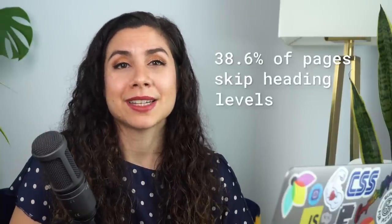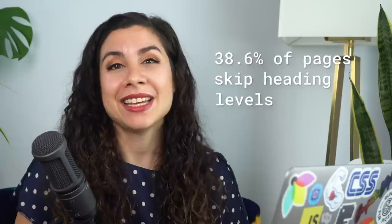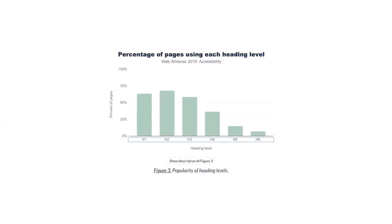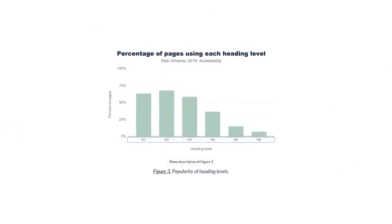According to research done for the 2019 Web Almanac, 38.6% of pages skip heading levels, and H2s are found on more sites than H1s — meaning some folks are just skipping H1s entirely in lieu of H2s. These are different heading levels that should be placed in order. Many popular screen readers enable navigating by quickly jumping through links, lists, headers, list items, iframes, and form fields like edit fields, buttons, and list boxes. So keep in mind that structure is always key to maintaining accessible navigation. You can always style stuff later.